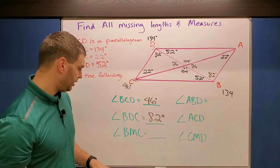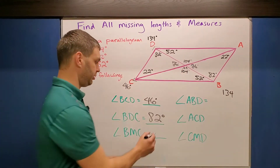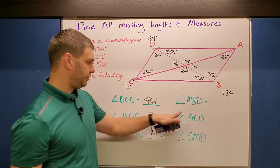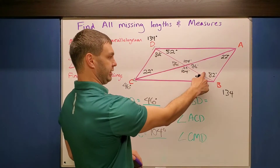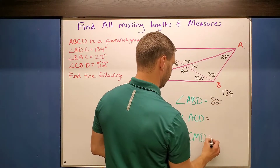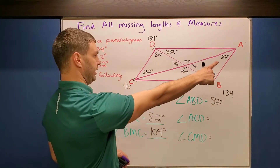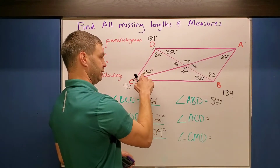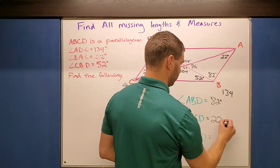So BMC is 104 degrees. Next is ABD — I already have that one: 82 degrees. And then ACD — follow it around — that's this angle, which we said was 22 degrees earlier.